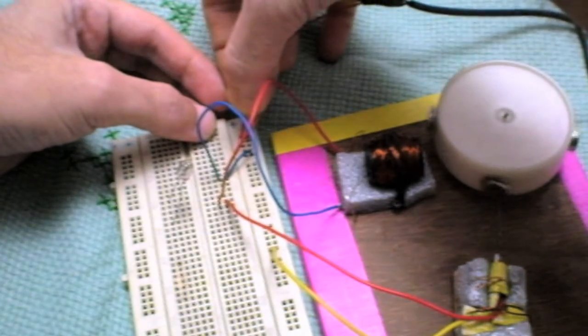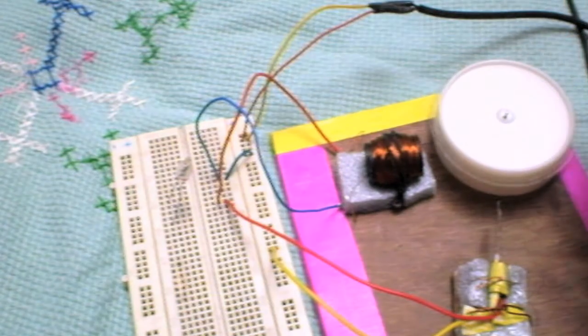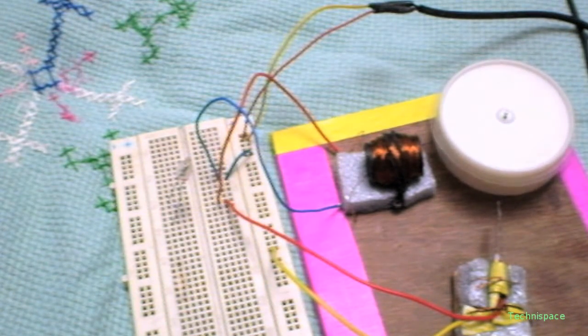Making connection as per given circuit, you can see a little trembling. Giving it a little spin, it's rotating faster clockwise.